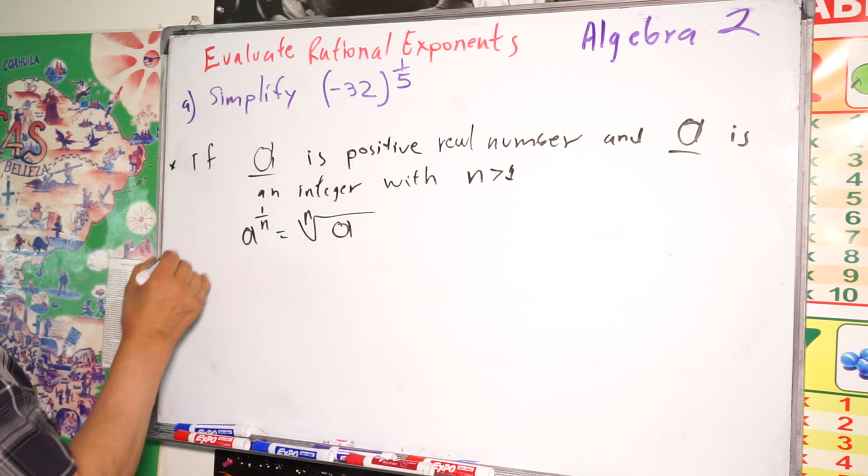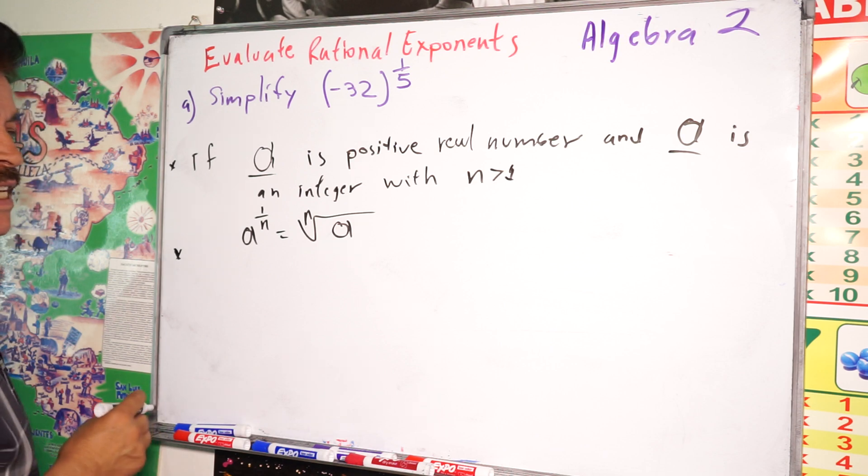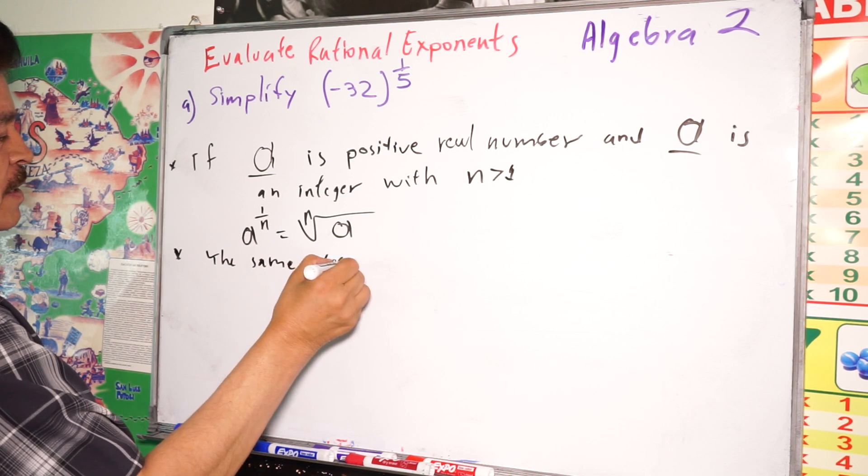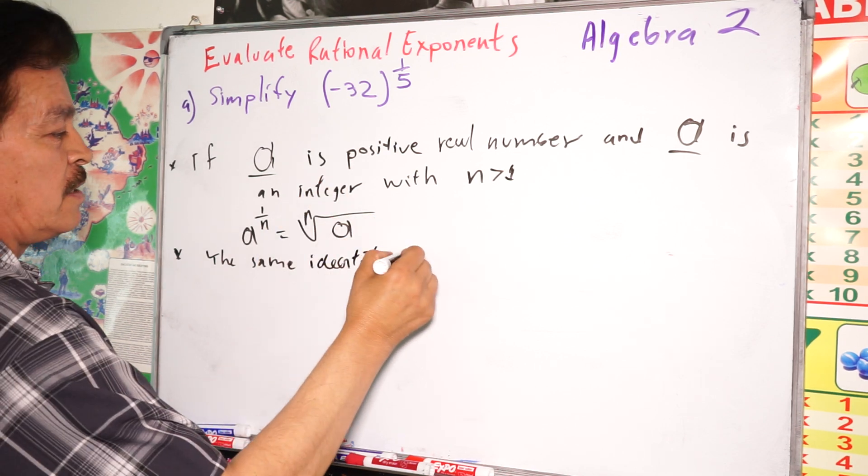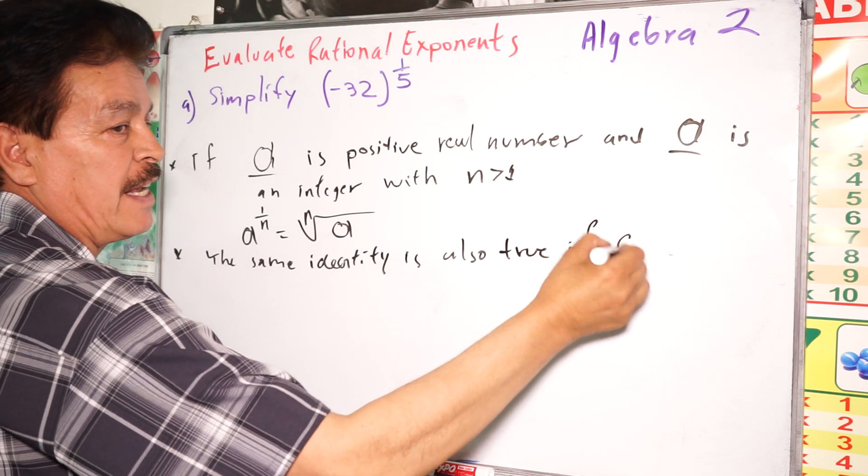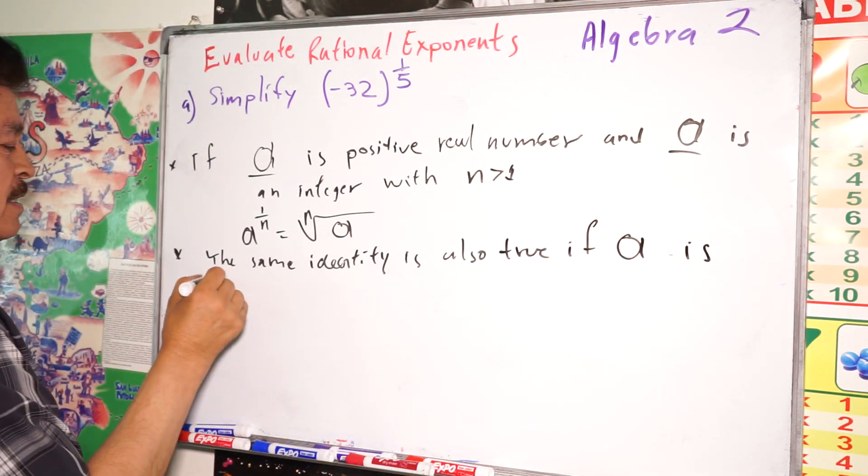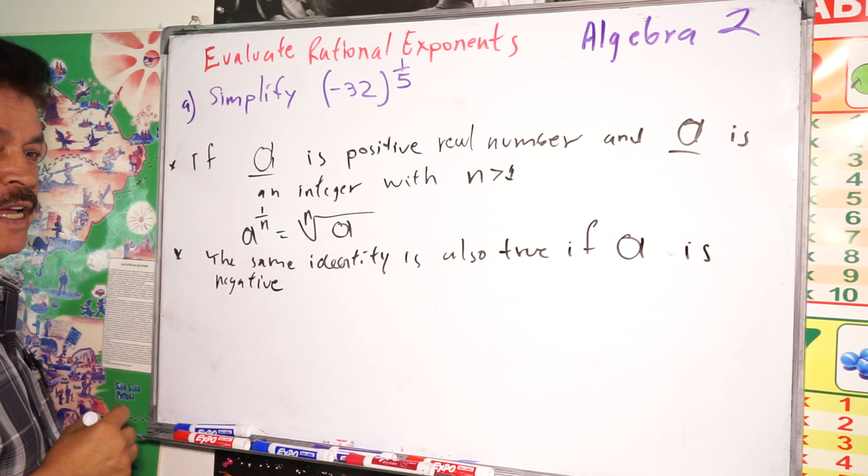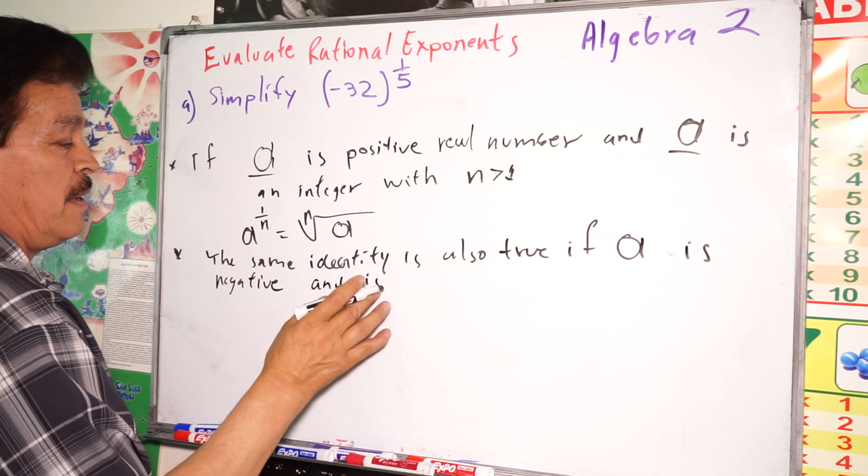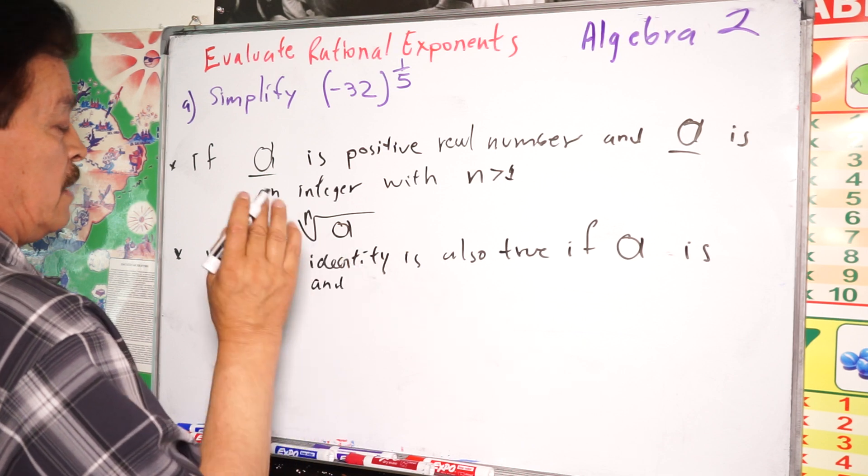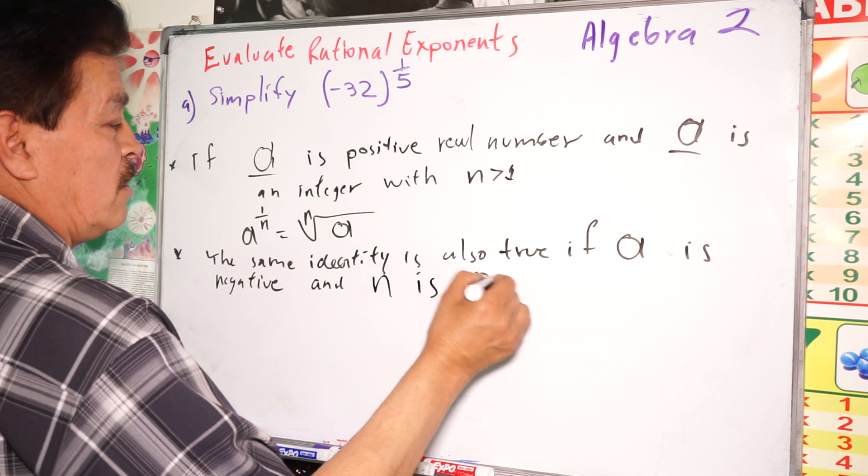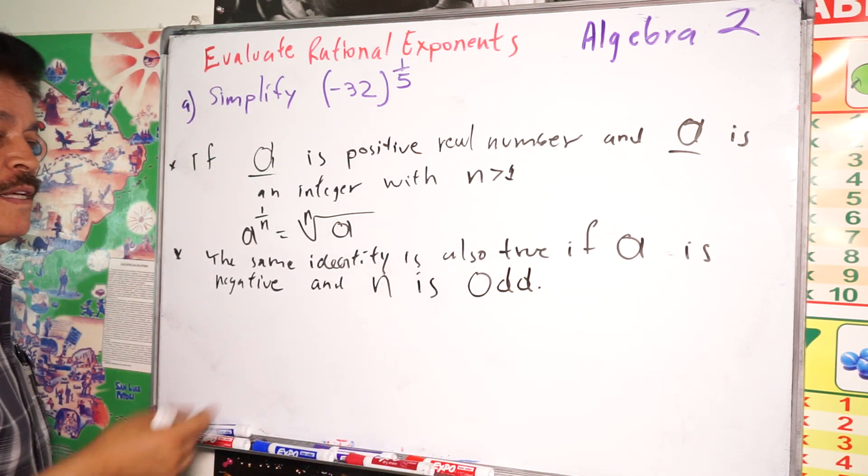Another point to review: the same identity is also true if a is negative and n is odd. This is another point.